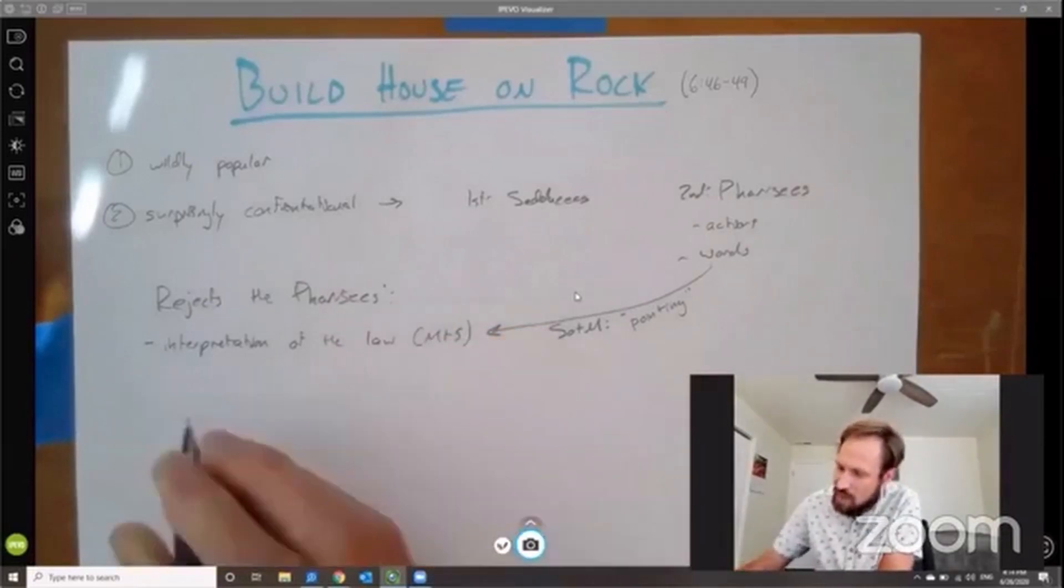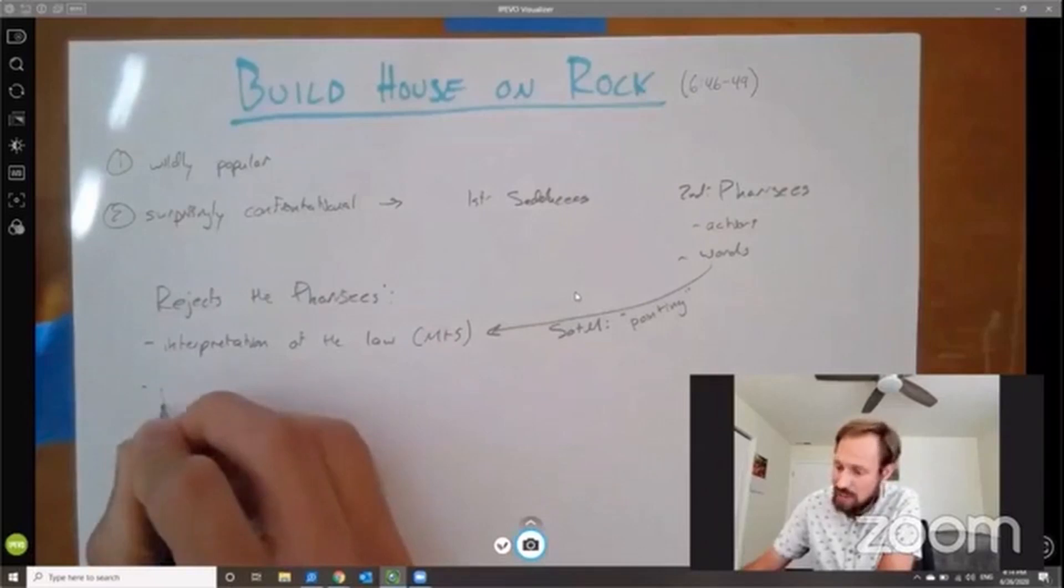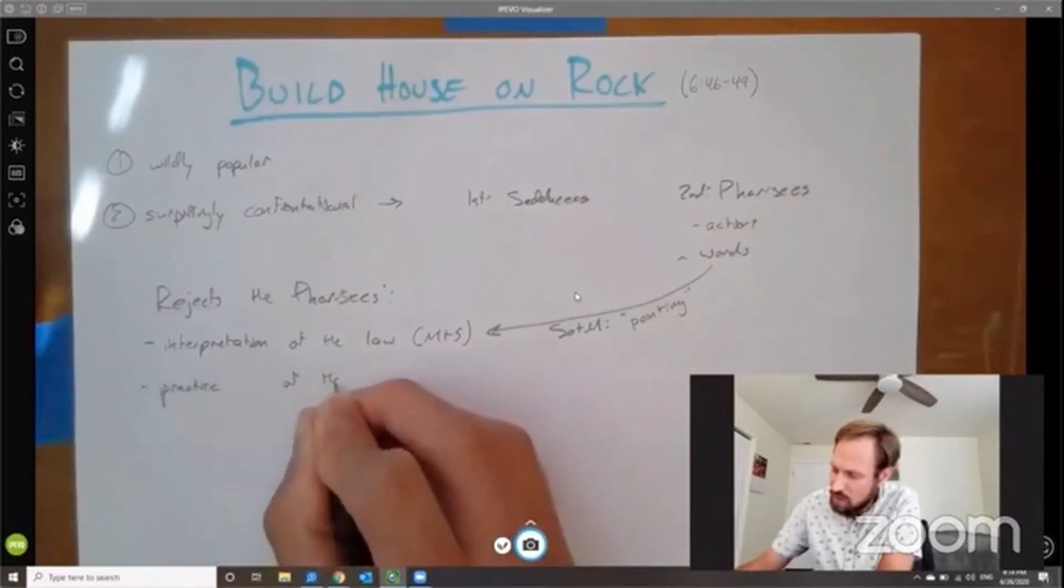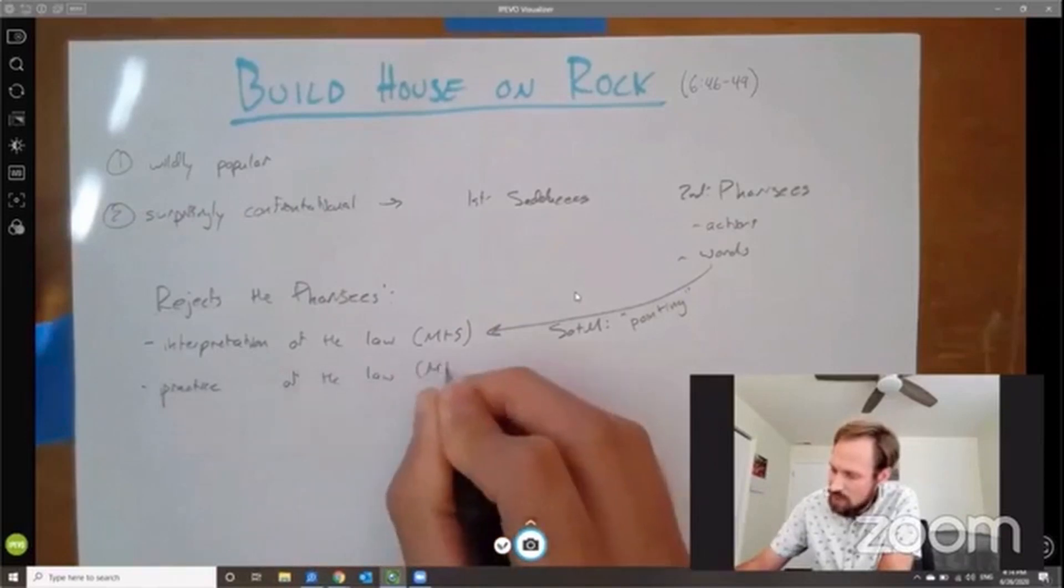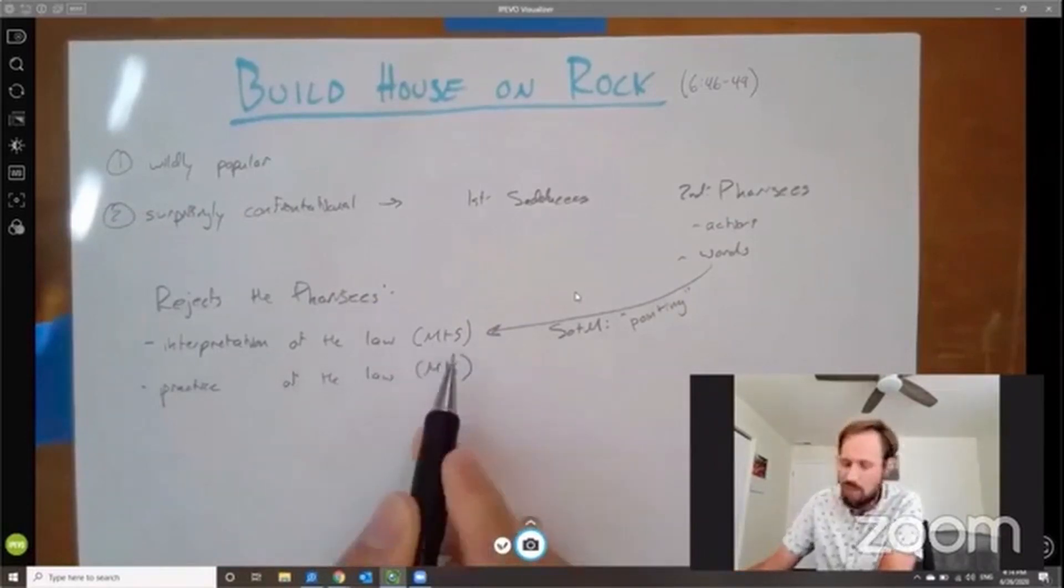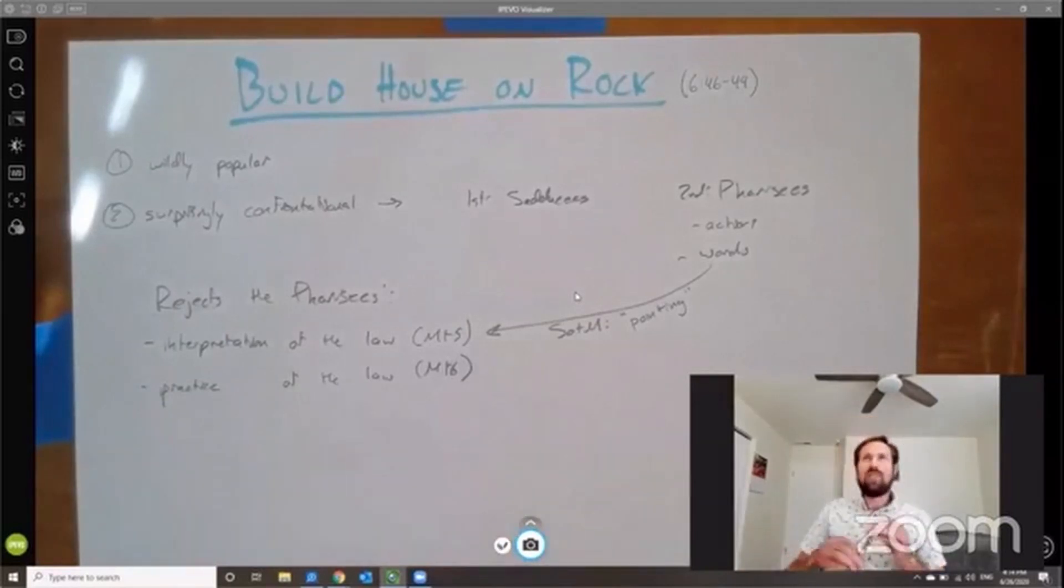And he's going to do that in Matthew 5. And then also, secondly, he's going to reject the Pharisees' practice. Practice of the law. And this is in Matthew 6. Now, let me remind you how he does each of these things. We studied Matthew a couple years ago as a church. And you remember in Matthew 5, there's a series of statements in which Jesus says, you have heard that it was said, but I say to you.